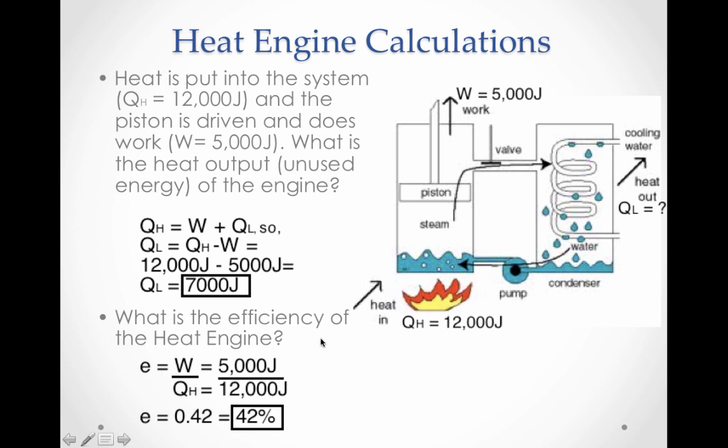So we can calculate the efficiency of our engine by taking the amount of work that we did—5,000 joules of useful work—and dividing by the amount of heat energy that we put in, the 12,000 joules. And when we do that we get an efficiency of .42 or only 42%. Wow! We spend a lot of energy to get out only a fraction of the useful work.